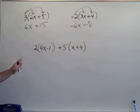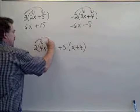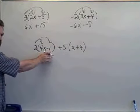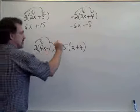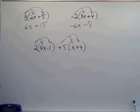This expression has two sets of parentheses. So I'll perform the distribution two different times. I'll distribute 2 as a multiplier for those two terms. I'll distribute a plus 5 as a multiplier for those two terms.